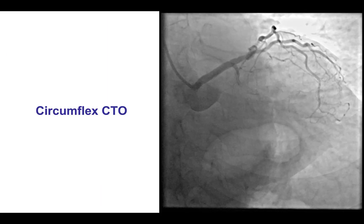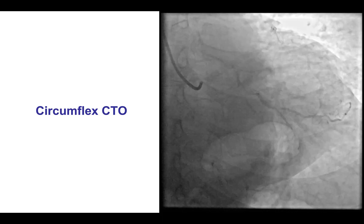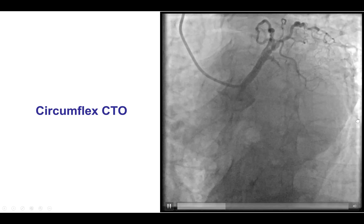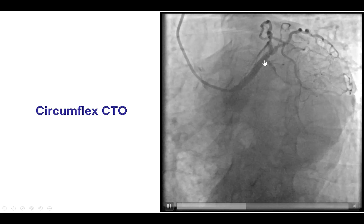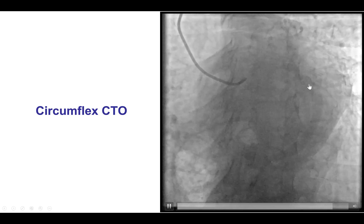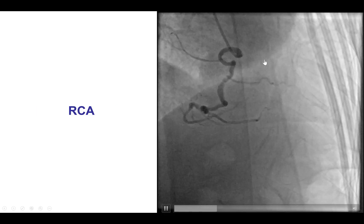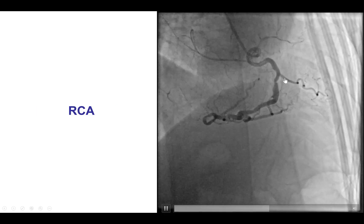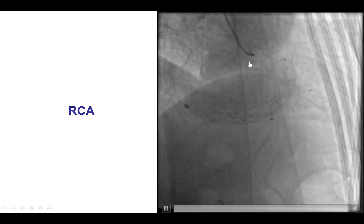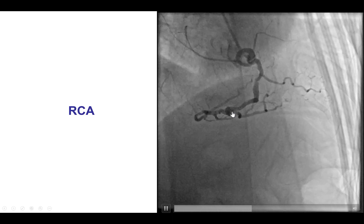The patient was referred for PCI of a circumflex chronic total occlusion with severe refractory angina. The occlusion had a well-defined proximal cap and good quality distal vessel. There were some collaterals coming from the right coronary artery that did not have significant disease, as confirmed by using intracoronary physiology.